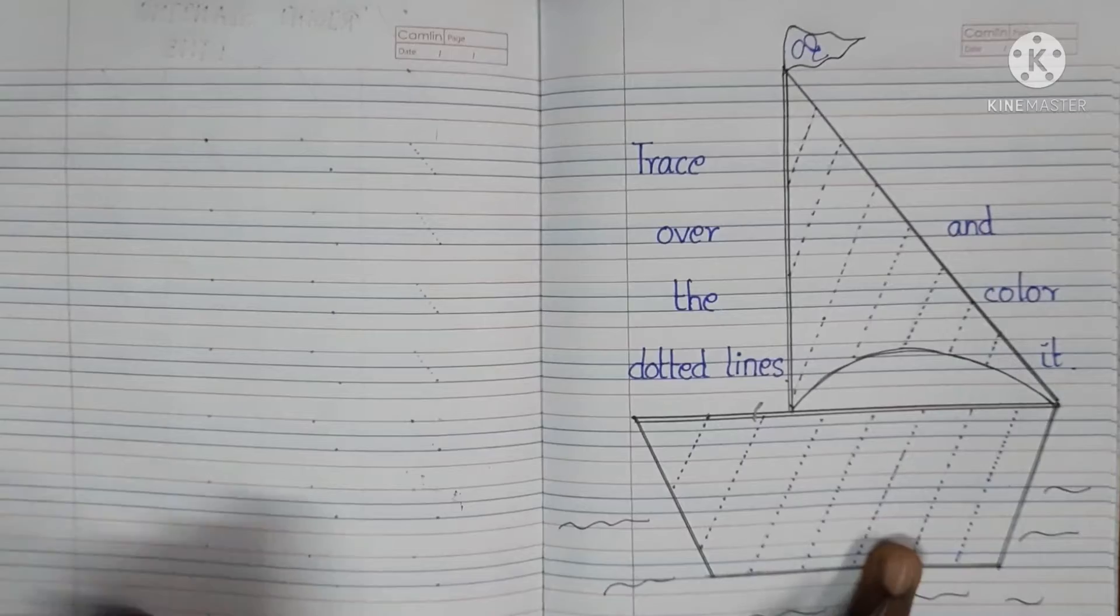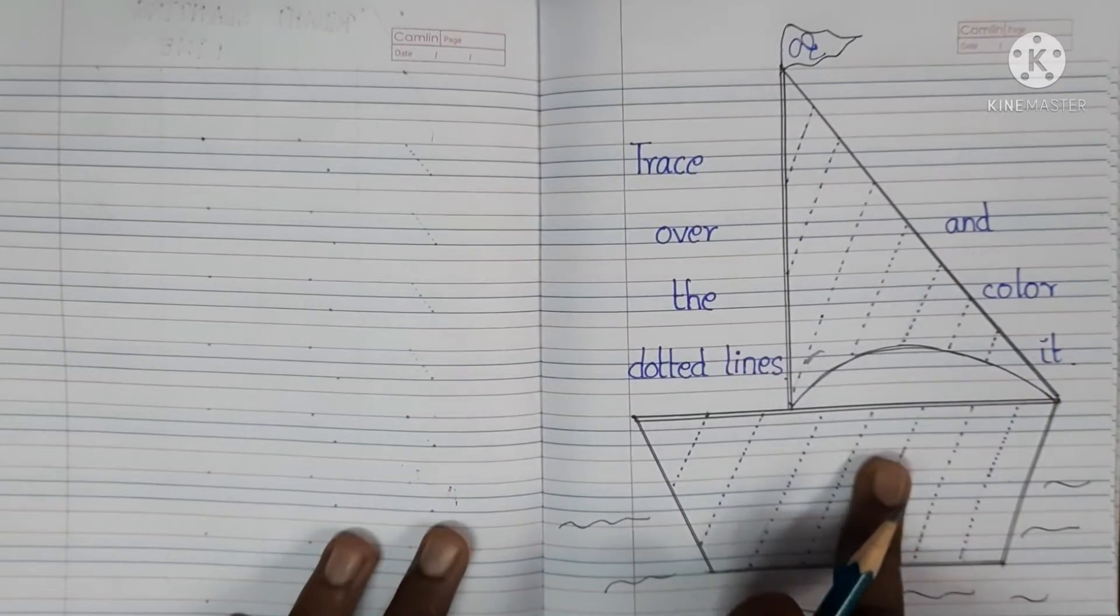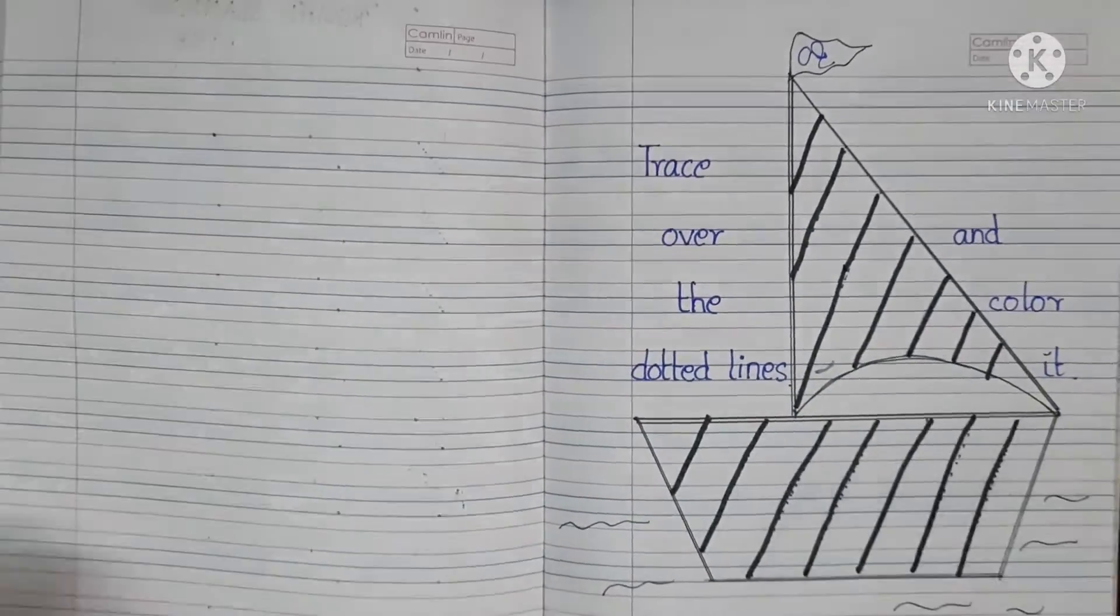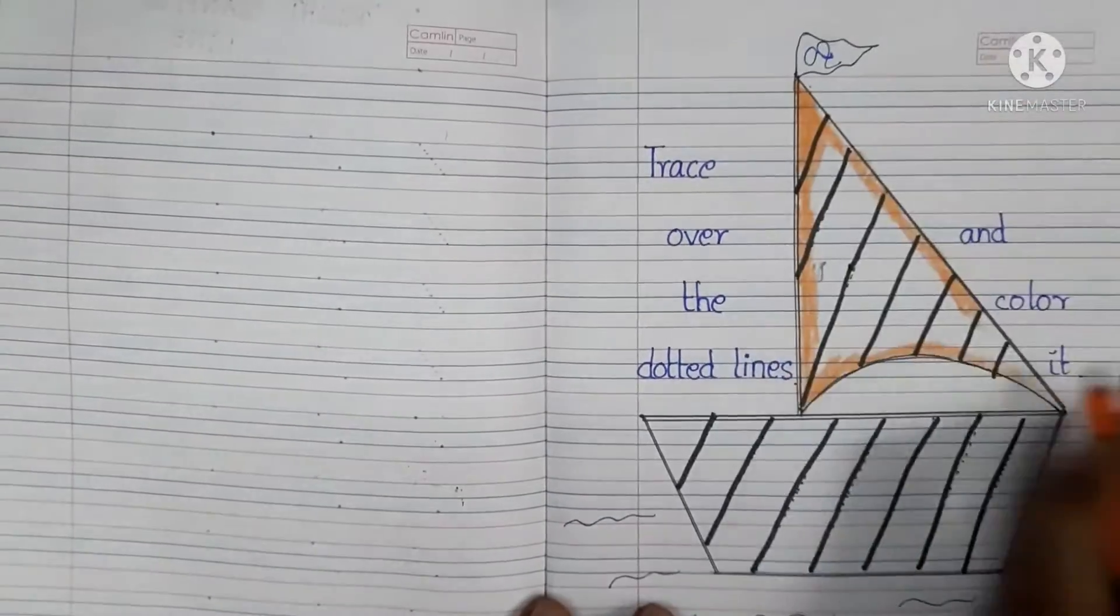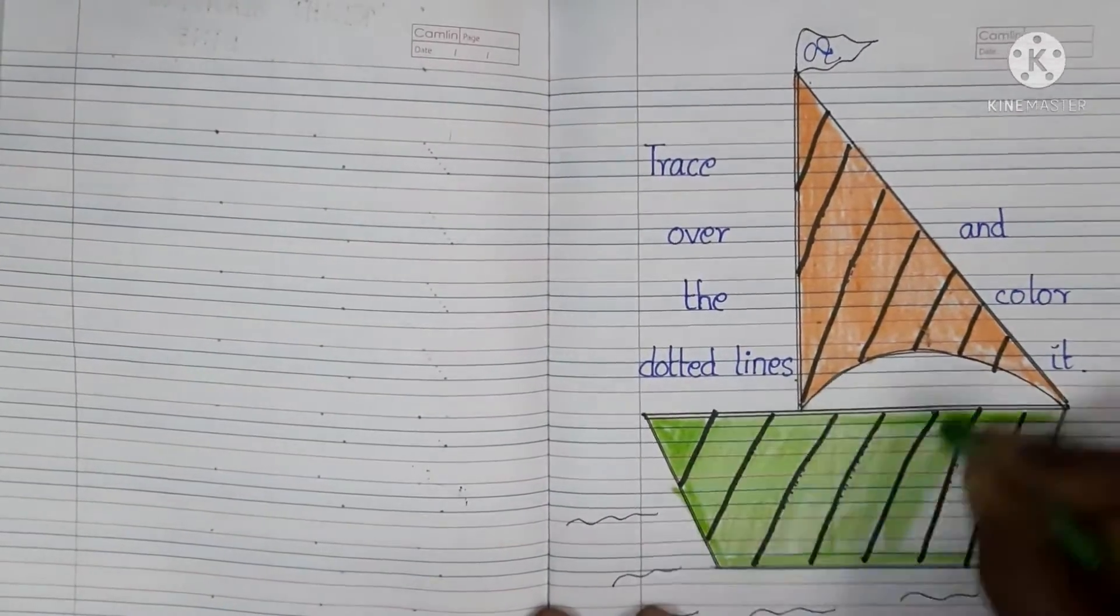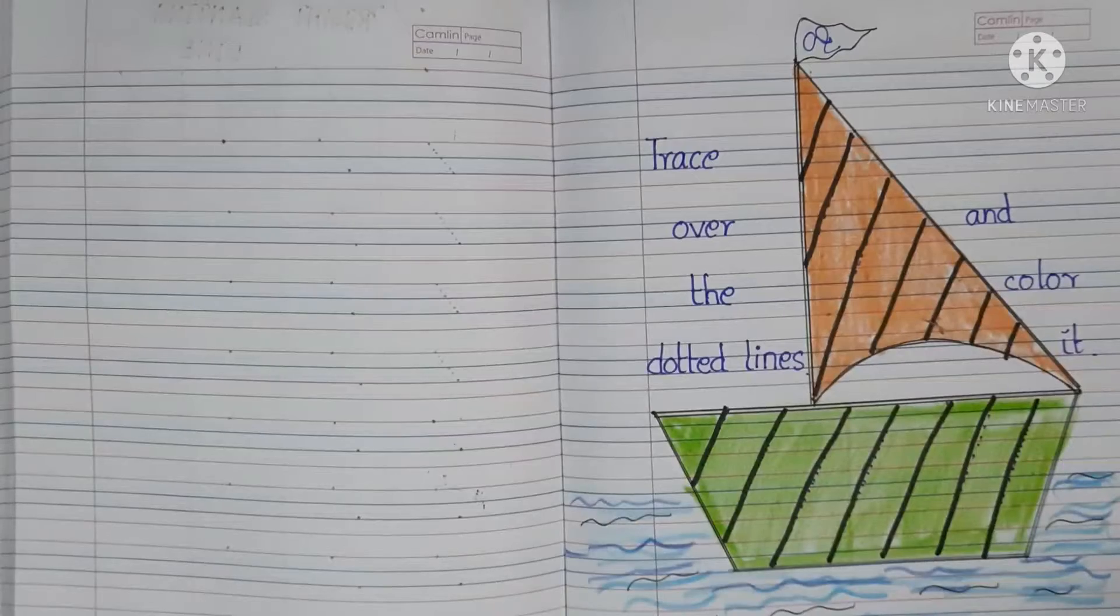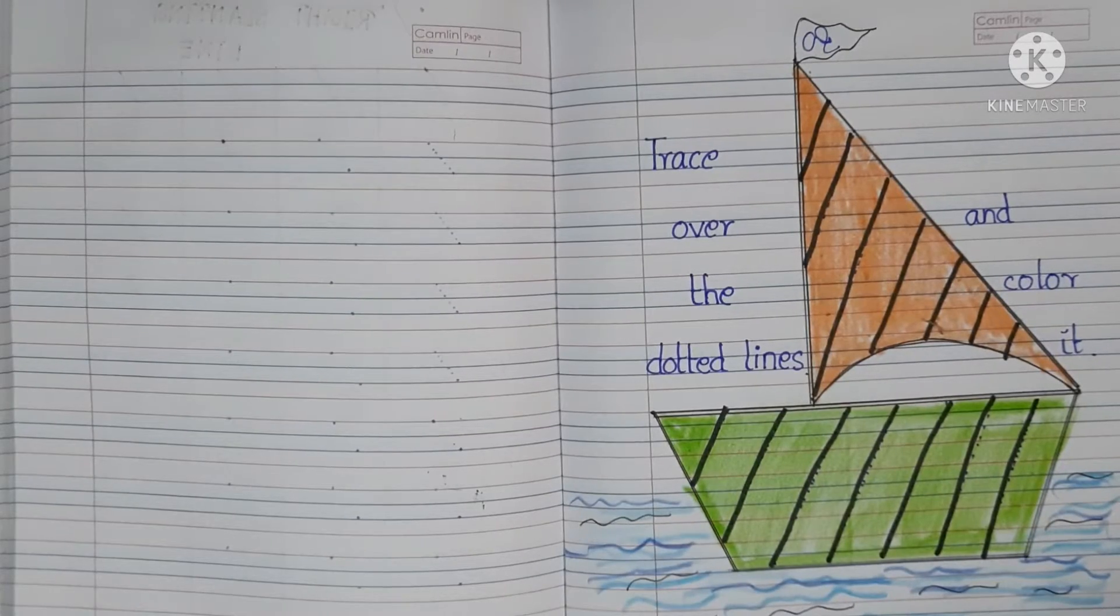we will put an activity to trace over the dotted lines and color. We will trace the first number in right standing. We finished the right standing line and we will continue with the next number.